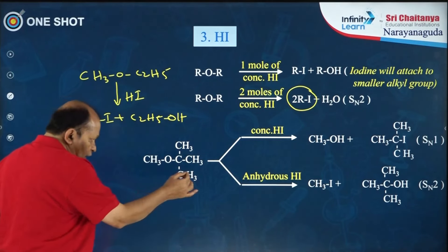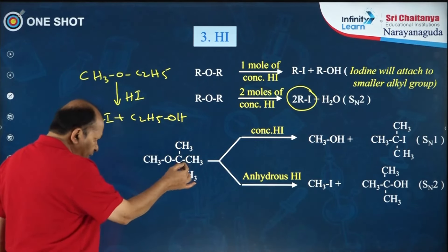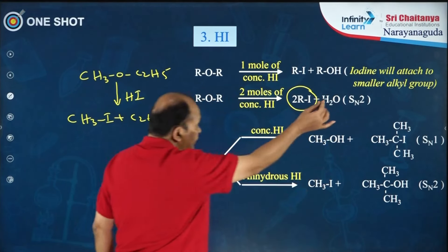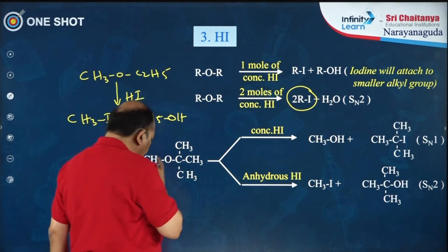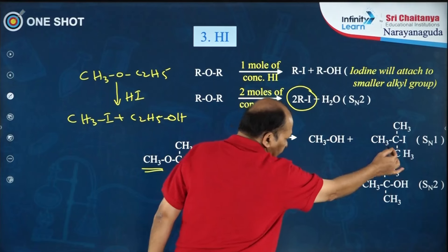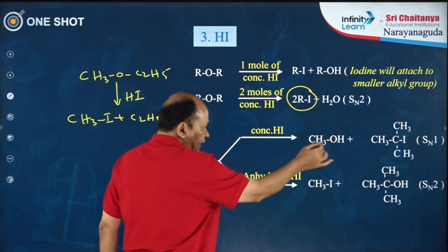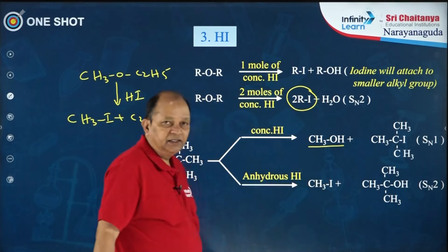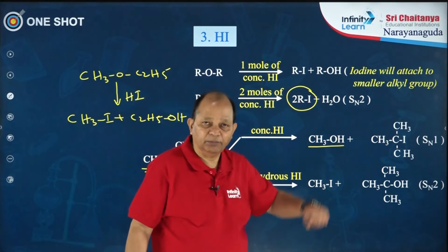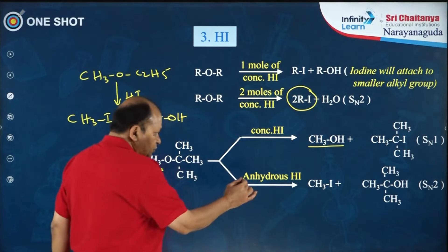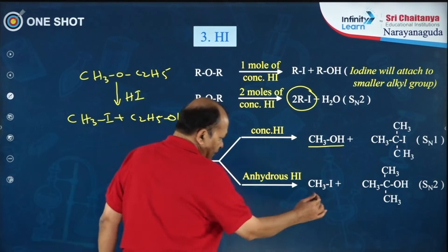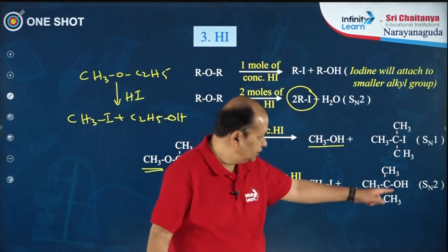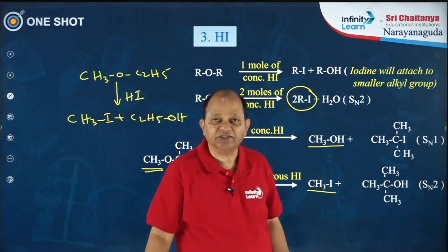If you take a more complex ether like tertiary butyl methyl ether and use concentrated HI, iodine is not attached to the smaller group — instead, iodine attaches to the bulkier alkyl group and you get methyl alcohol and tertiary butyl iodide. This reaction follows the SN1 mechanism. If you use anhydrous hydrogen iodide, the products are methyl iodide and tertiary butyl alcohol via the SN2 mechanism.